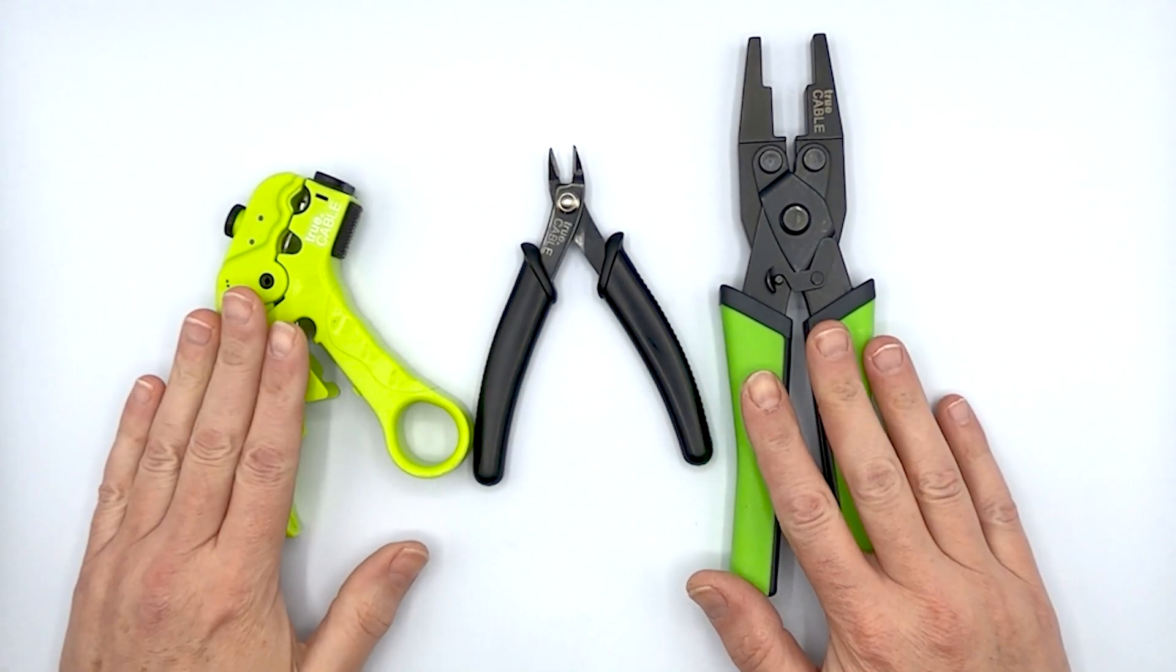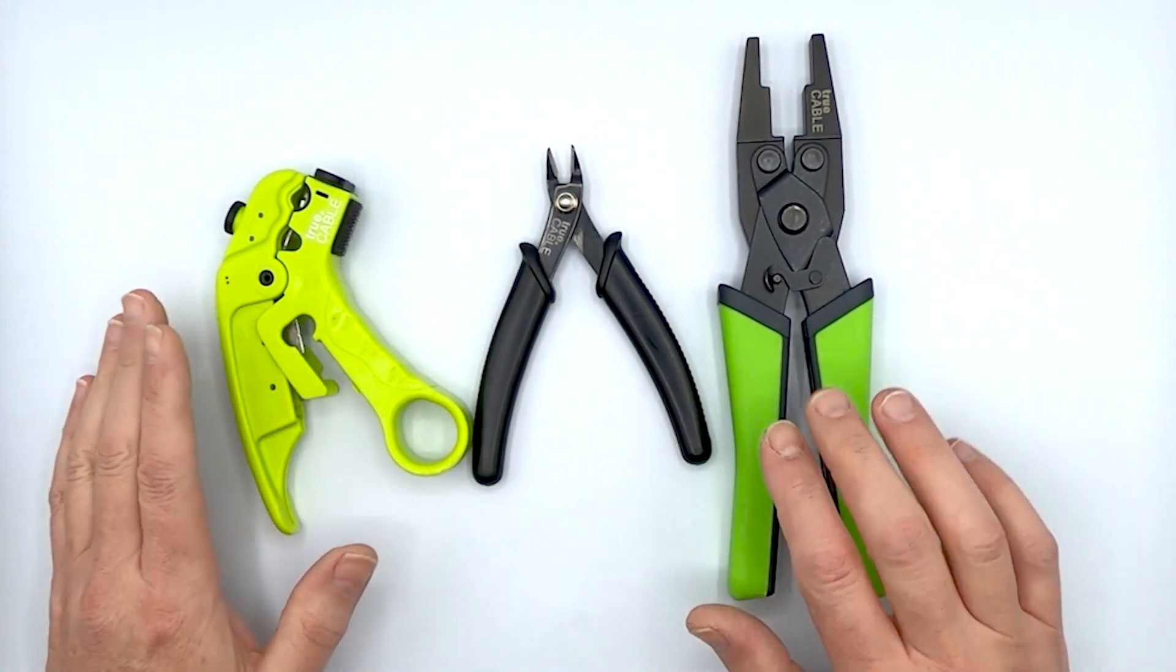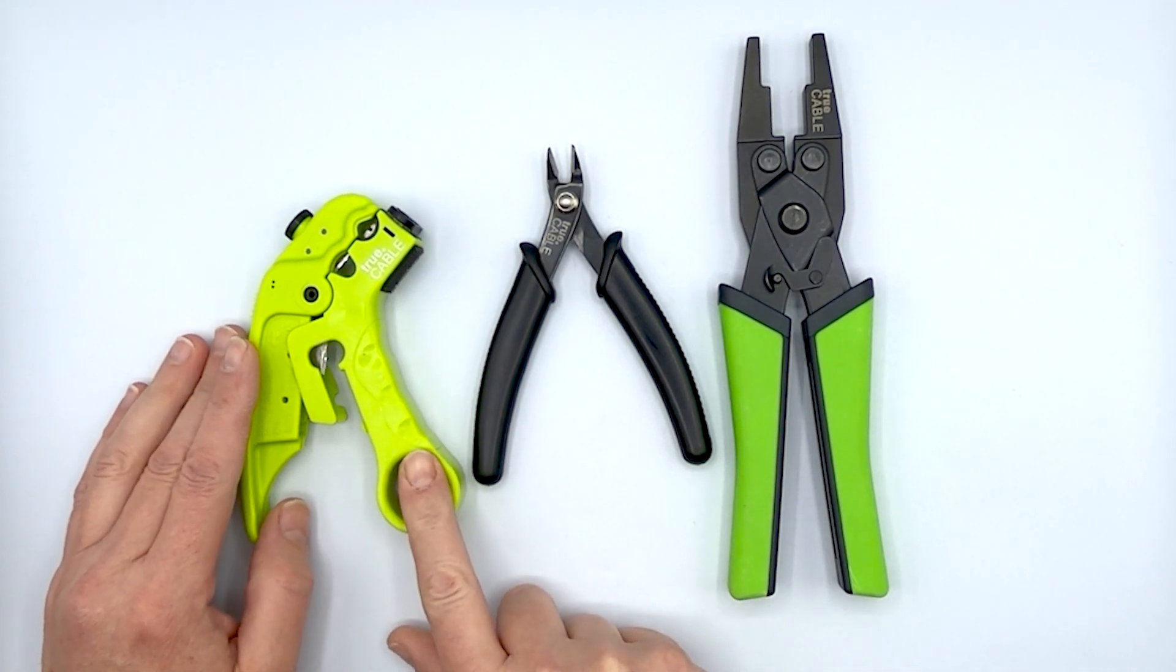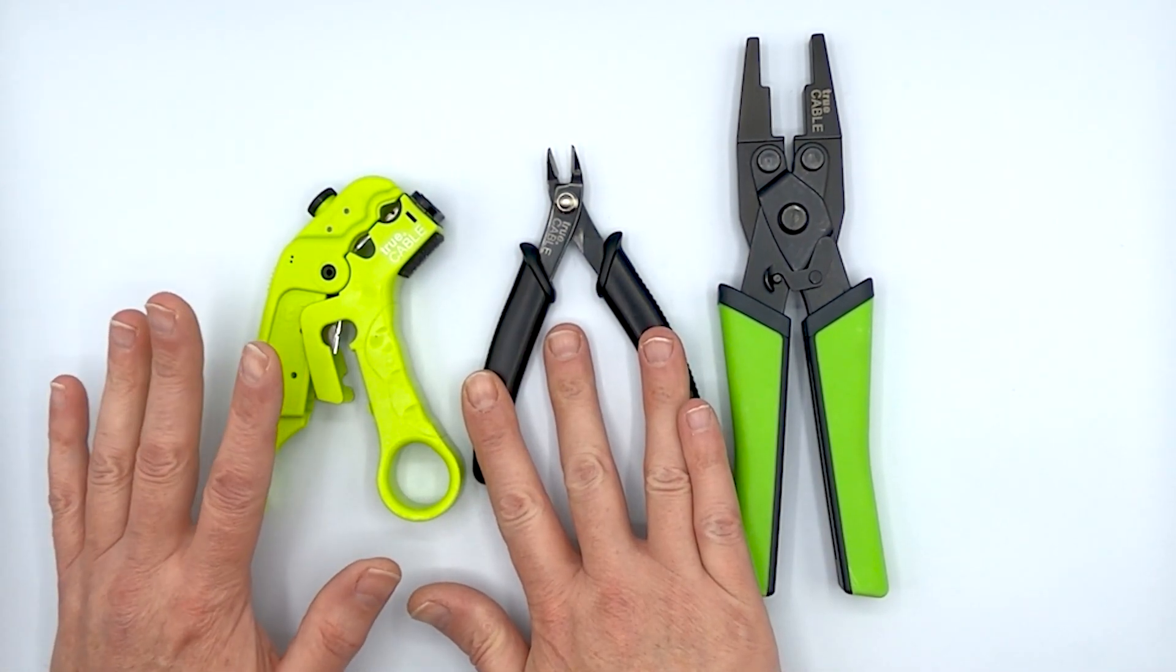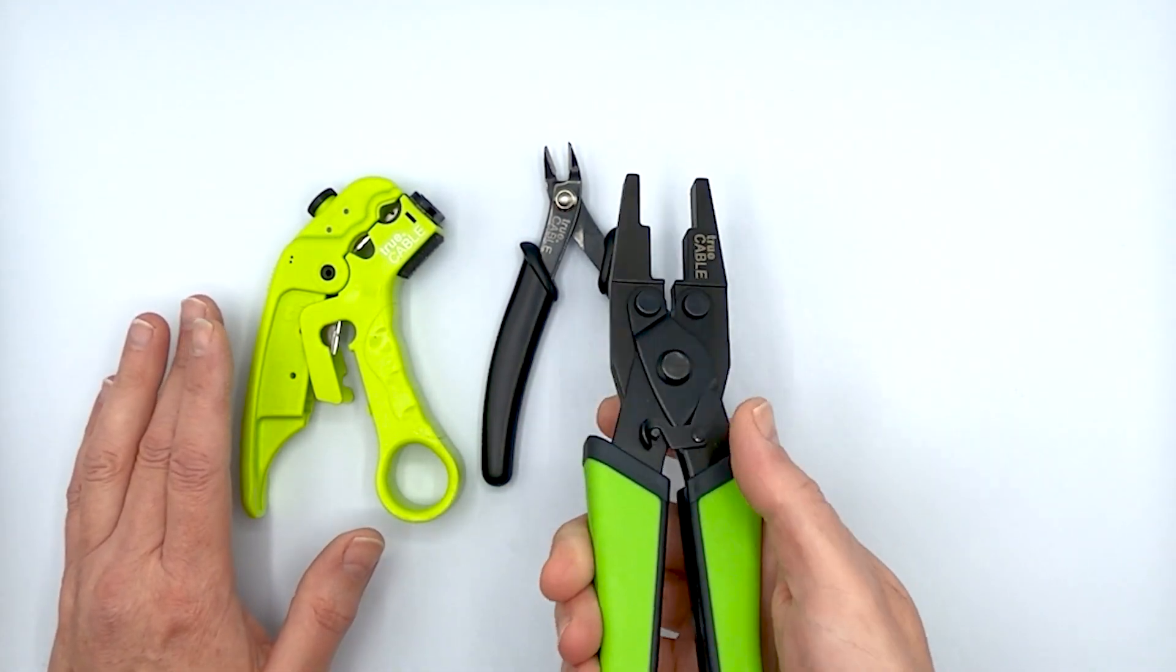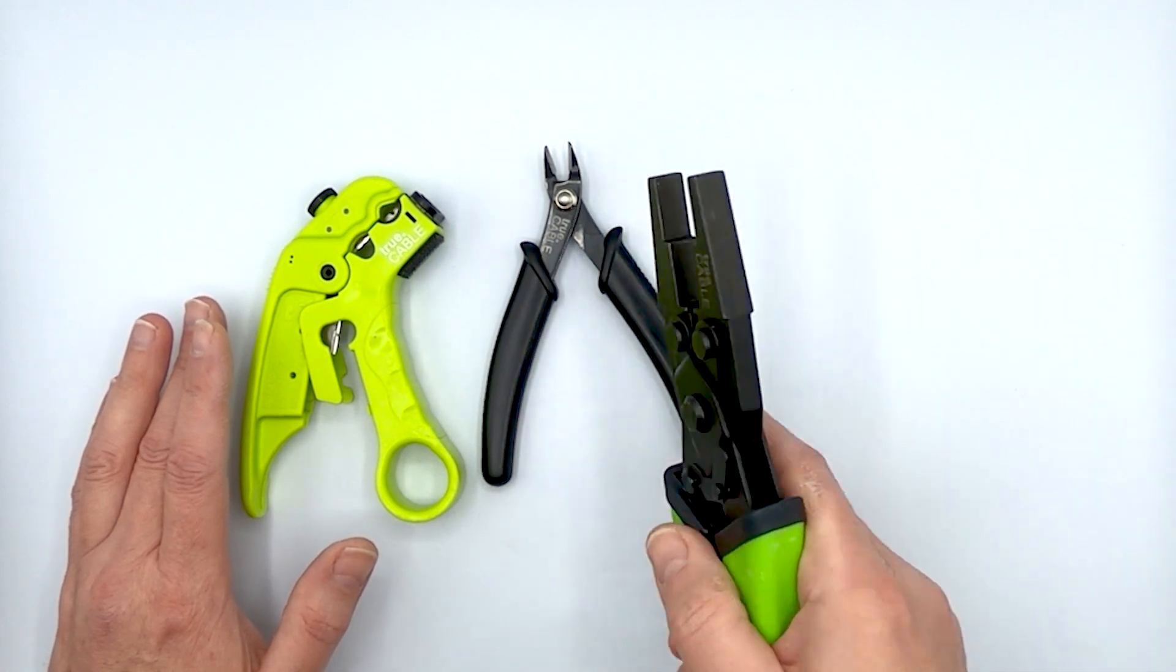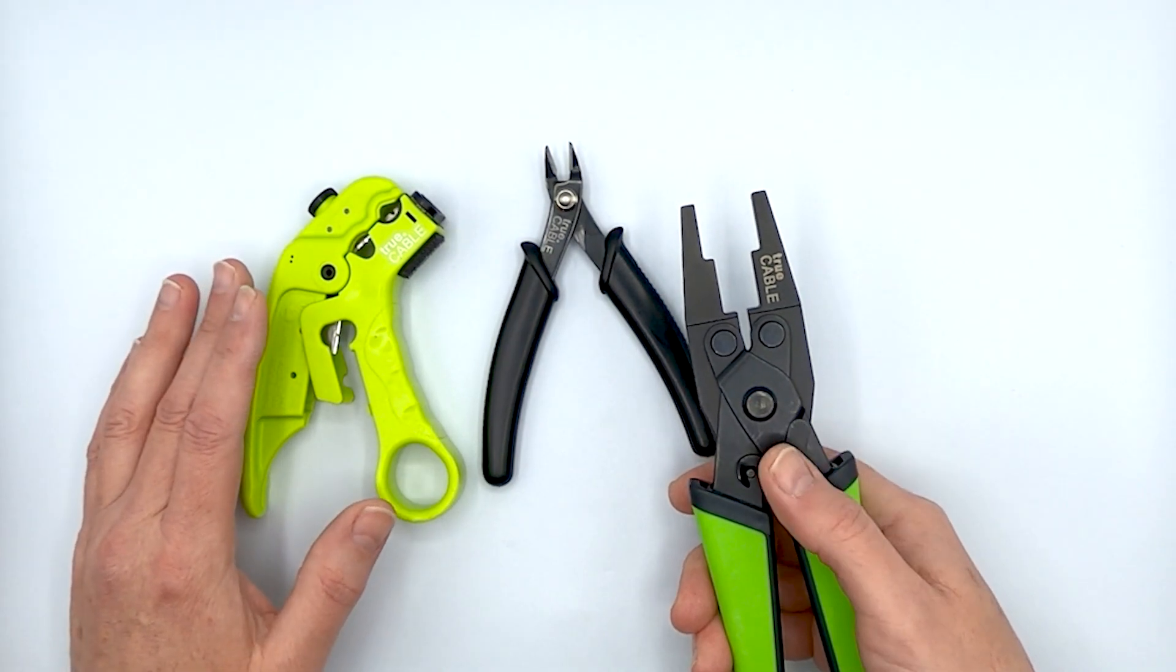Here's some tools that are going to come in really handy when terminating the unshielded field term plug. One is a cut and strip tool to strip your ethernet cable. Another one is a flush cutter to flush cut the conductors from the conductor holder cap. And then parallel jaw pliers like the ones that TruCable provides are extremely useful for closing that conductor holder cap and terminating the actual field termination plug.